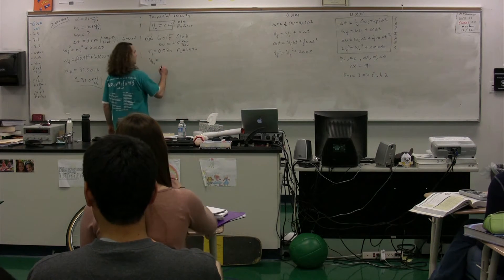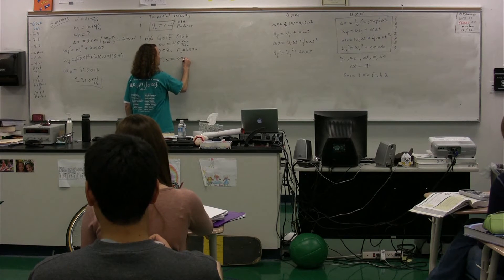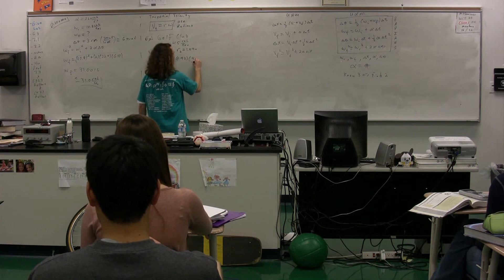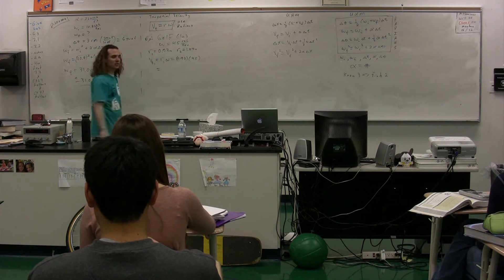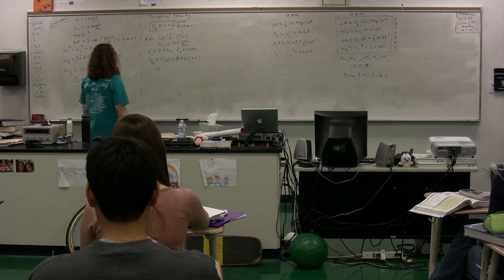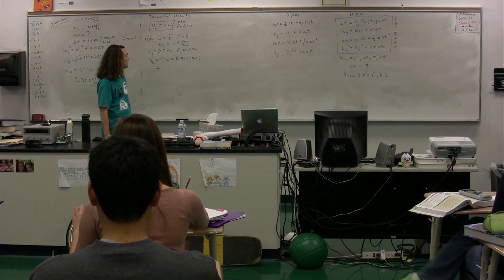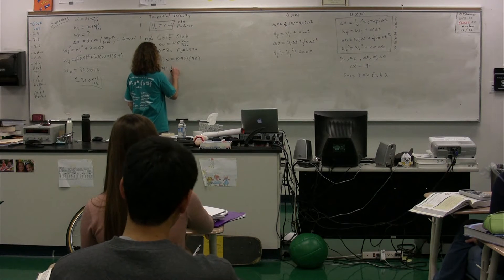The tangential velocity for the first one is going to be equal to the radius for the first one times the angular velocity, or 0.93 multiplied by the angular velocity, which is 45. Tangential velocity... 41.85.